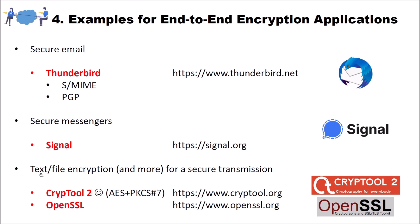For text and file encryption and more for secure transmission, I have two advisors. First, you could use Cryptool 2 — which we will see later in this video. Cryptool 2 is also open source and free, and you can get it from Cryptool.org. You could also use OpenSSL, which implements a lot of cryptographic scenarios — for instance, hashing of files, file encryption, creation of certificates, and so on. You can also encrypt text or files using OpenSSL. I highly recommend all four of these applications.